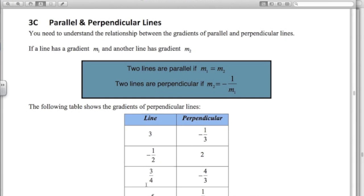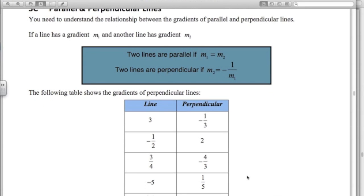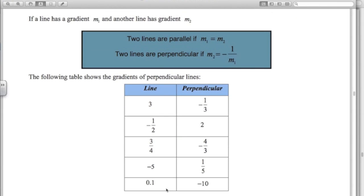If 3.5x is our original gradient, then minus 4 over 3 is the gradient of the perpendicular. If negative 5 is our original, then 1.5x, the perpendicular. Or 0.1, which is actually 1 over 10, then the perpendicular will be negative 10. The negative reciprocal.